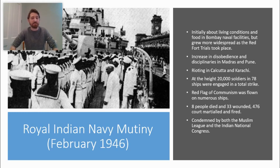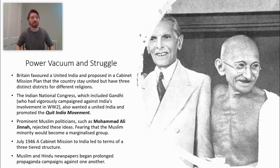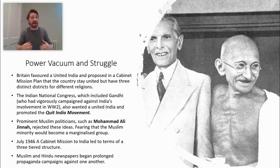This rebellion was actually condemned by the Indian National Congress and the Muslim League, who were the two most important political parties in India at the time. However, it still marked an important turning point, and people were becoming increasingly insistent on independence. It became really obvious, with Attlee being elected, the pressure from America, and the growing national sentiment in India, that independence was on its way.